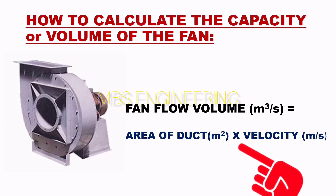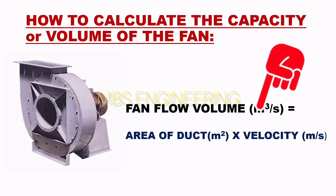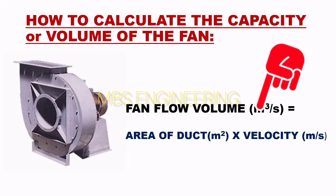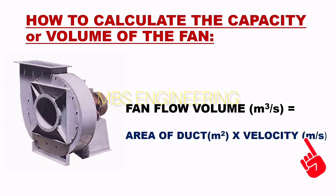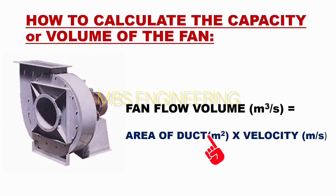In this equation: the volume of the fan is in cubic meters per second; the velocity of the fan is in meters per second; and the area of the duct is in meters squared.